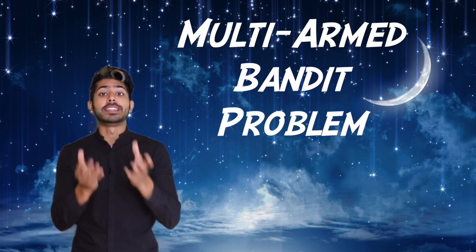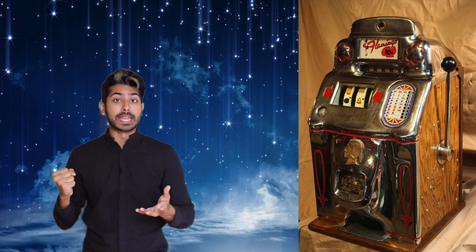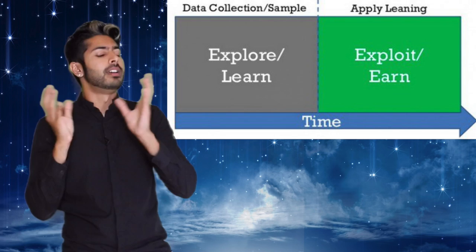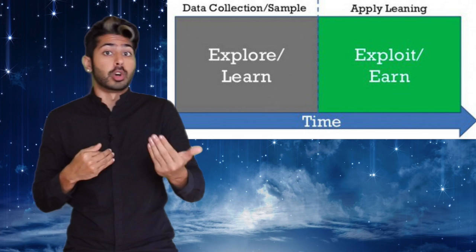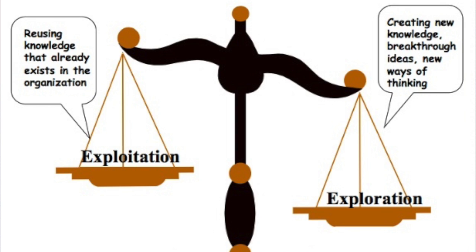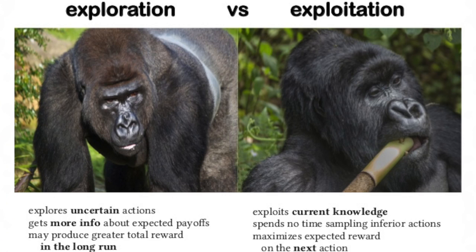This is called the multi-armed bandit problem. The bandit being the name of an old style slot machine with an arm, or several, on the side that you pull down. The agent has to make a choice between using machines that are known to produce good results, exploitation, and trying out new machines that have unknown results but could give better results than the others, exploration. Exploitation is optimizing decisions based on existing knowledge, and exploration is attempting to acquire new knowledge. It's a tradeoff that all reinforcement learning agents make when optimizing for a reward value.